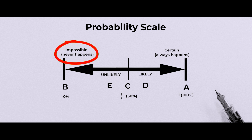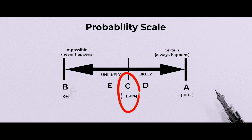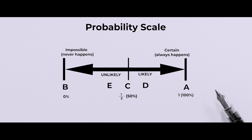Impossible means it never happens. So if an event you are sure will never happen, then you place that event at 0%. Then you can see C — there you will see 'half' or 50%. We put an event here which is as likely to happen as not likely to happen — it is 50-50%. It can either happen or not happen.